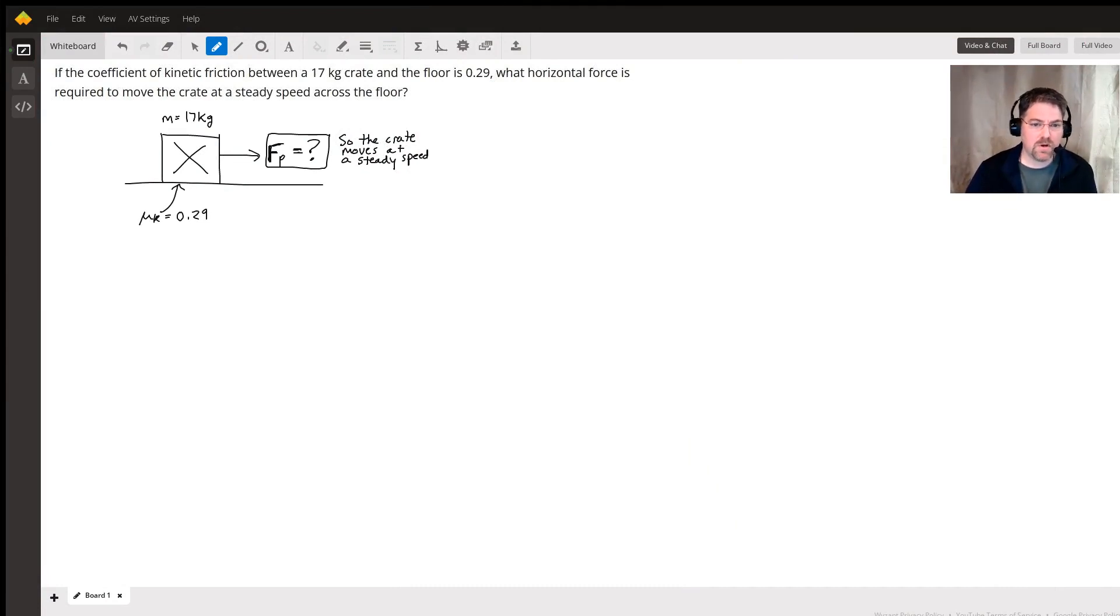We've got this problem here with a crate that's being pushed across the floor, and we want to solve for the push force or horizontal force so that it moves at constant speed, basically where the acceleration is going to be zero. So we're going to say a_x is zero meters per second squared.